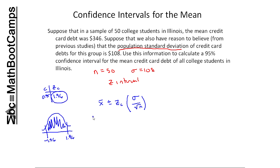So my x-bar in this particular example is 346. I'm adding and subtracting 1.96 times the population standard deviation, which was 108, divided by the square root of 50. So this entire right-hand side is called the margin of error, and I'm going to calculate that first, and I get 29.9.